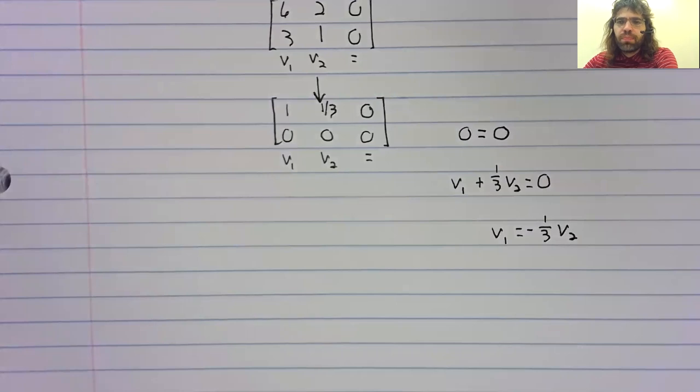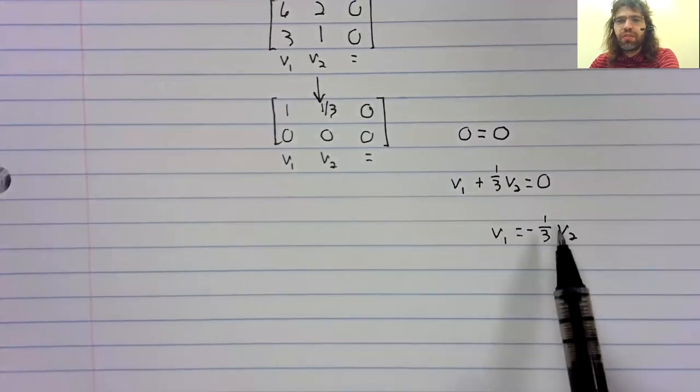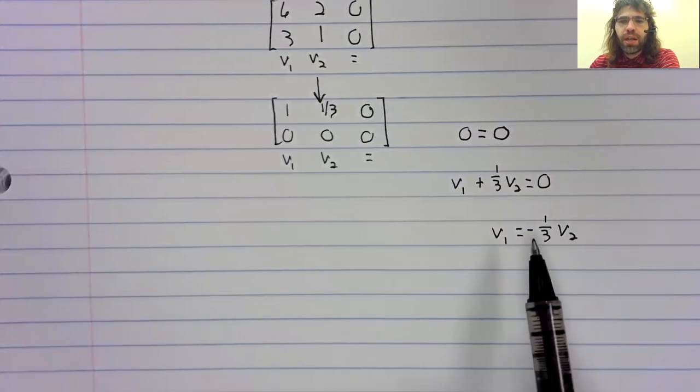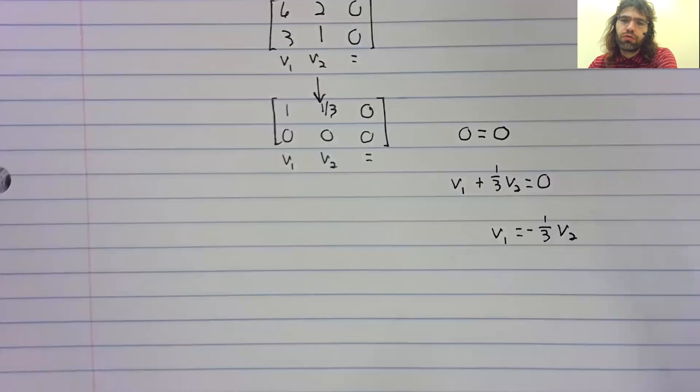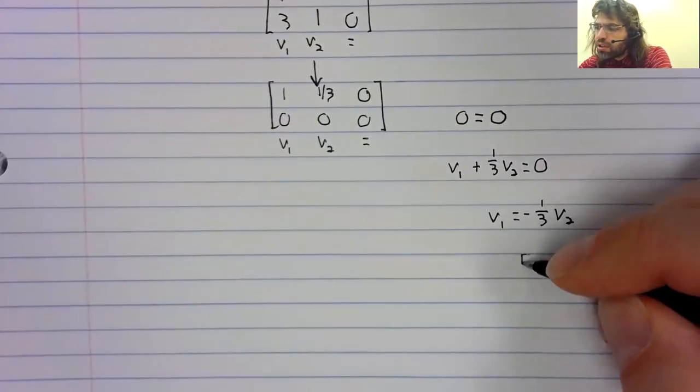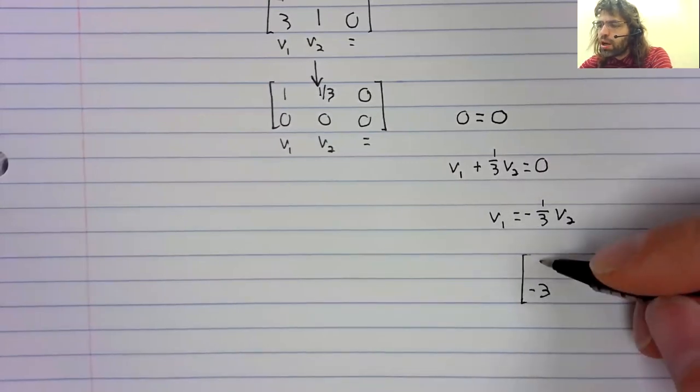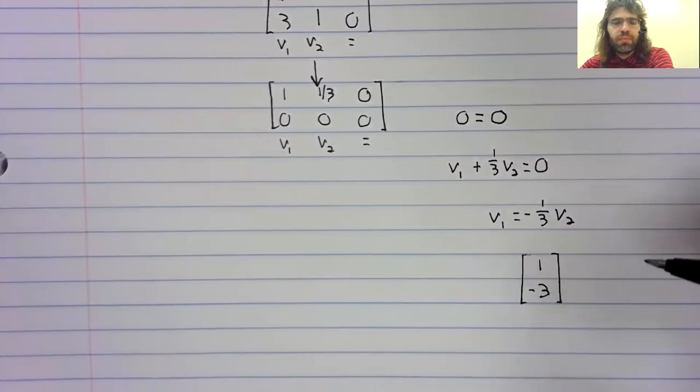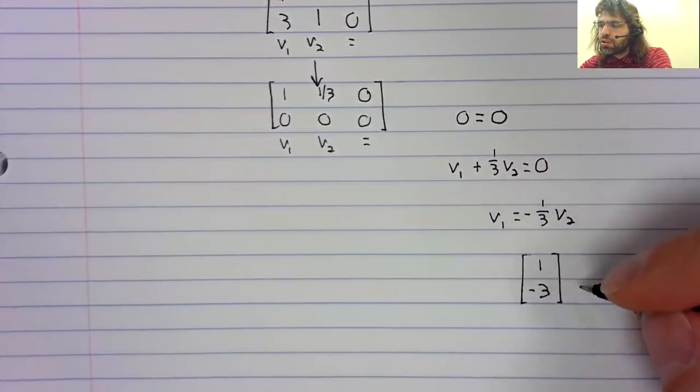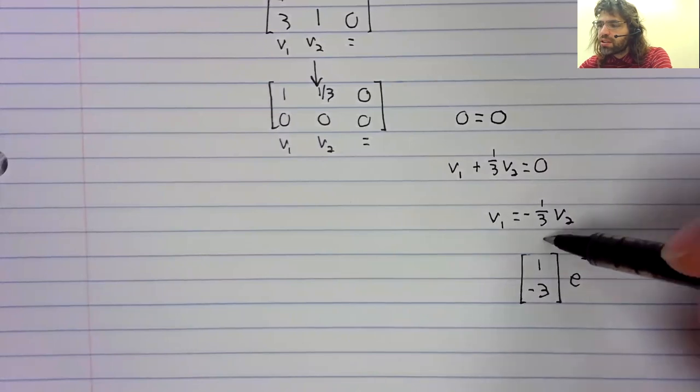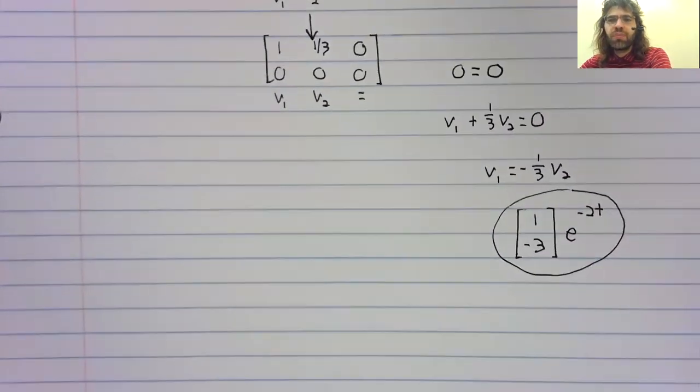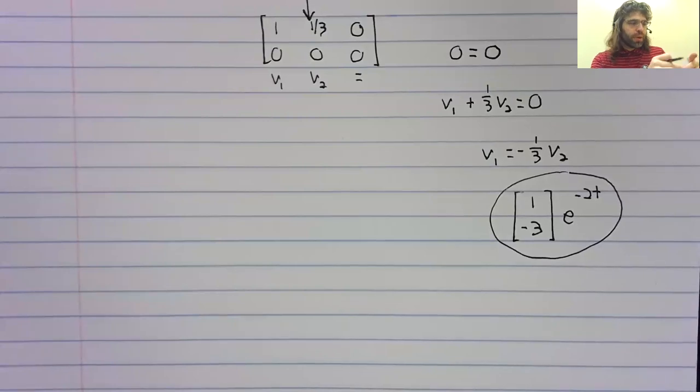And now any pair of values of v one and v two that satisfy this equation give us an eigenvector. The only condition we have is that they can't both be zero. So if we let v two be negative three, that would make v one positive one. This is an eigenvector. And from this, we get a second solution to our differential equation.